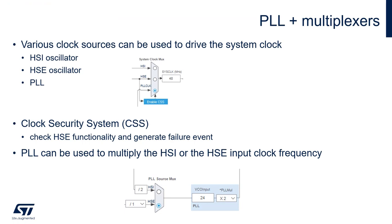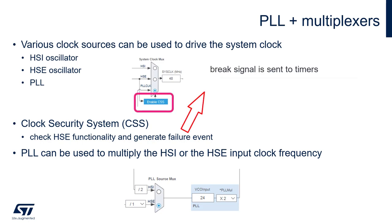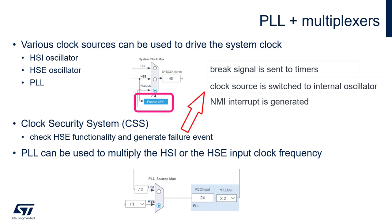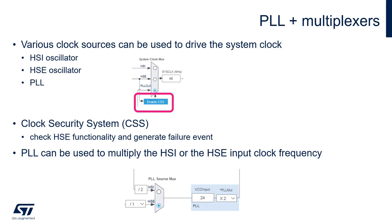The next parts of the clock tree are multiplexers, CSS, and PLL. The clock configuration has several multiplexers, giving us the possibility to select various clock sources to drive the system clock. There is also a CSS option — the Clock Security System checks whether the HSE oscillator operates properly. If not, a clock failure event is sent to the break input of the timers, and an interrupt is generated to inform the software about the failure, allowing the MCU to perform rescue operations. The last part is the PLL, which is used to multiply the HSI or HSE input clock frequency.